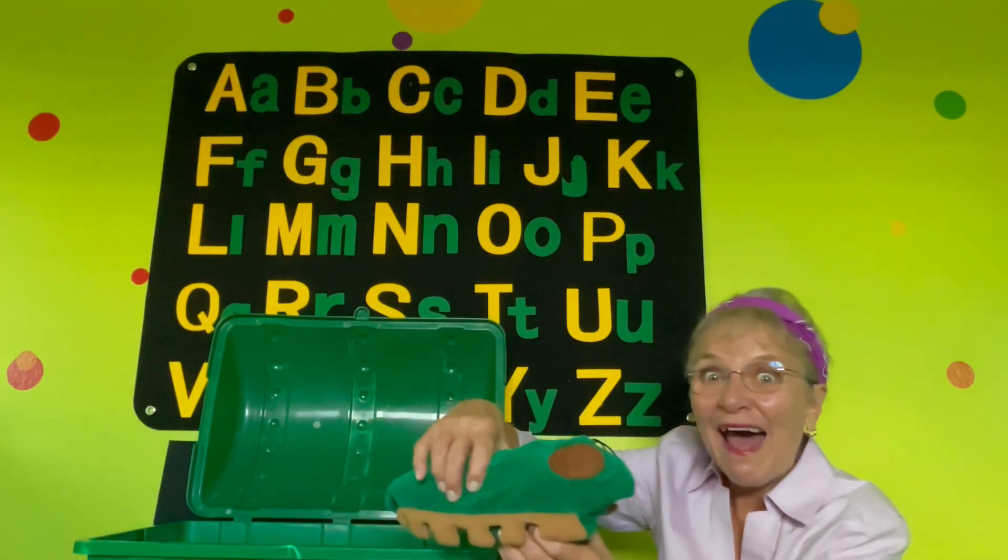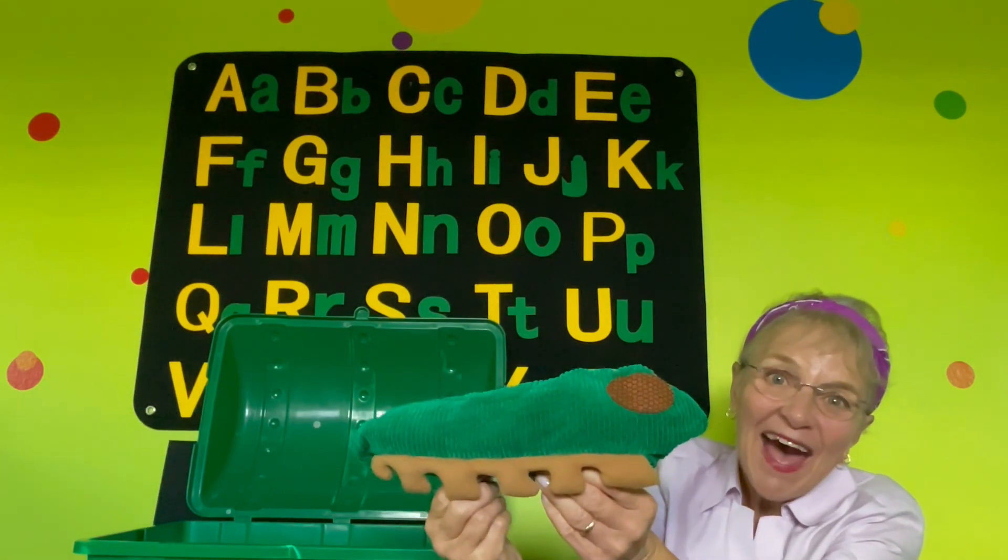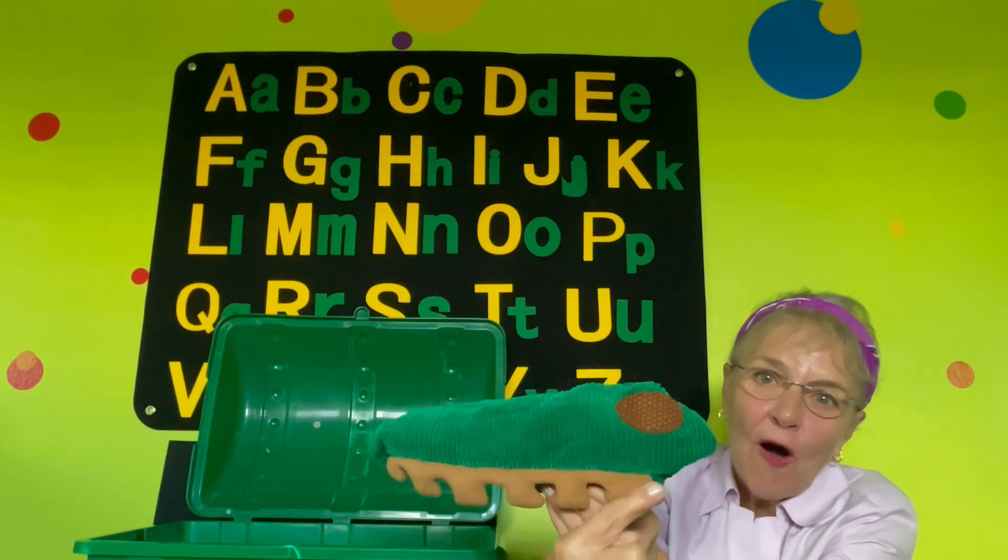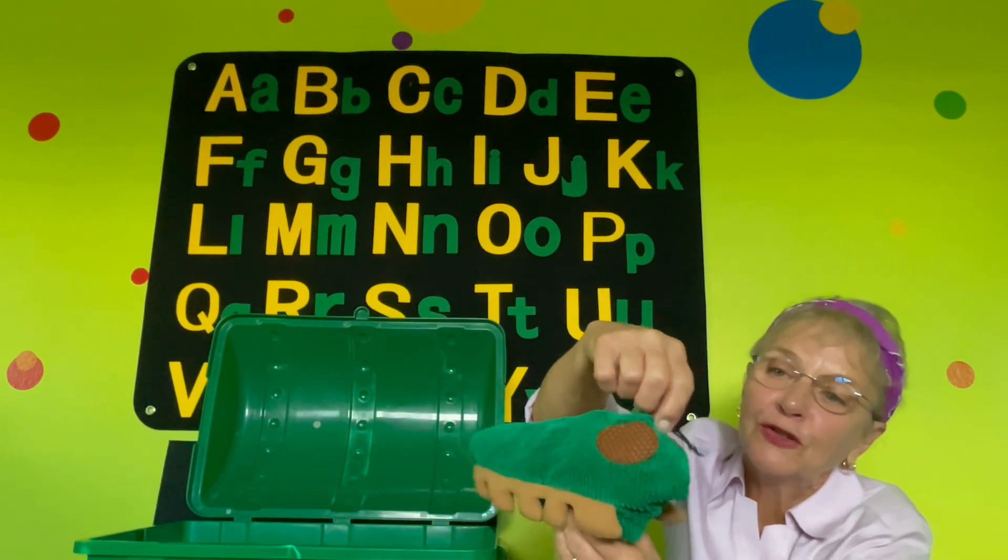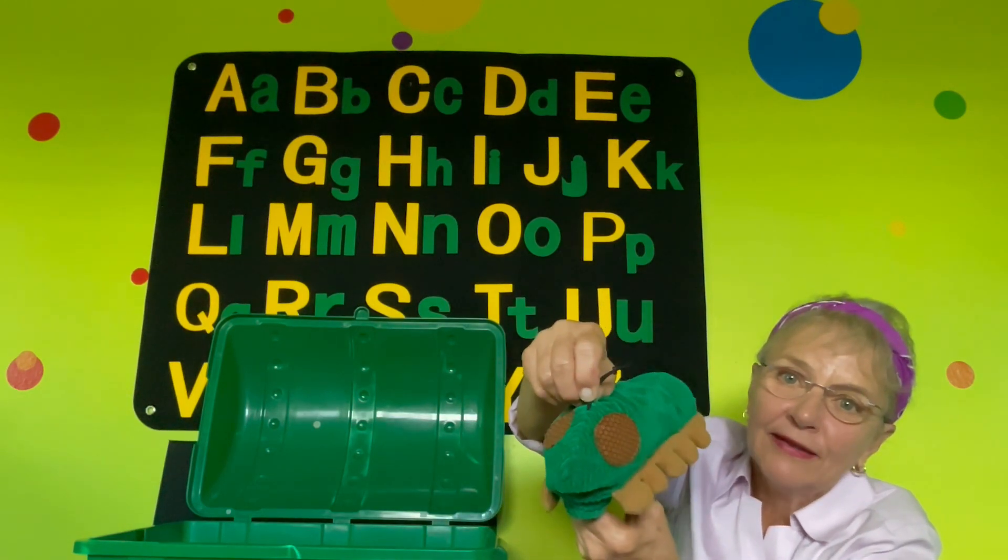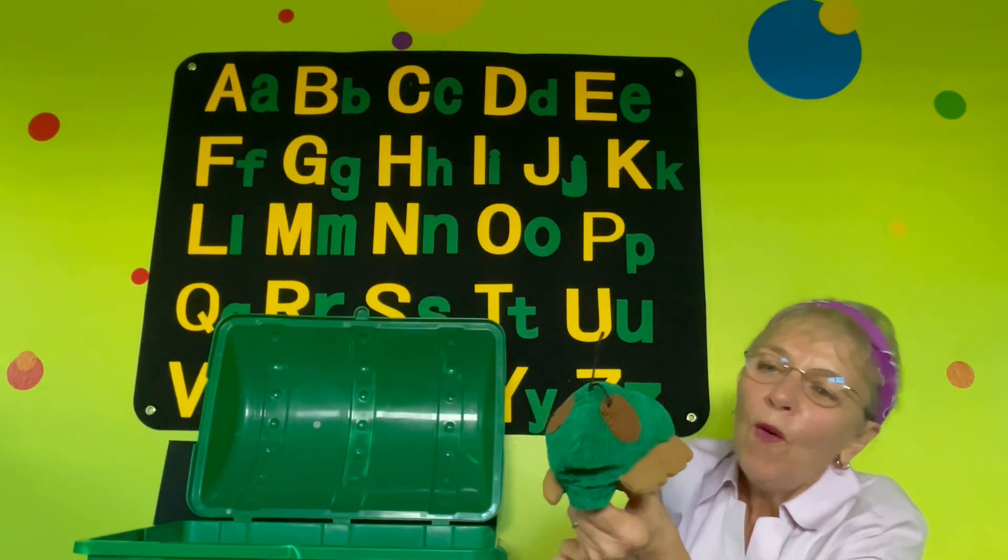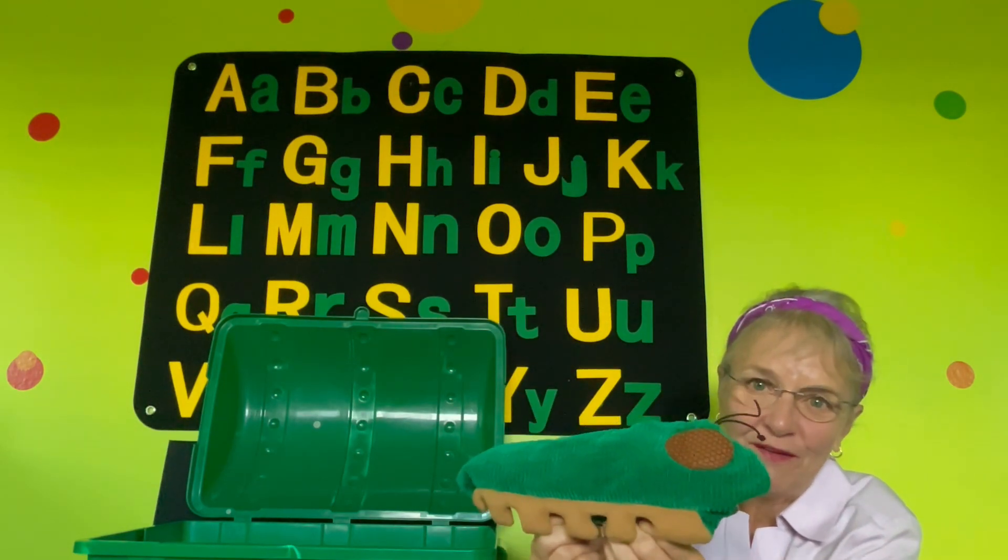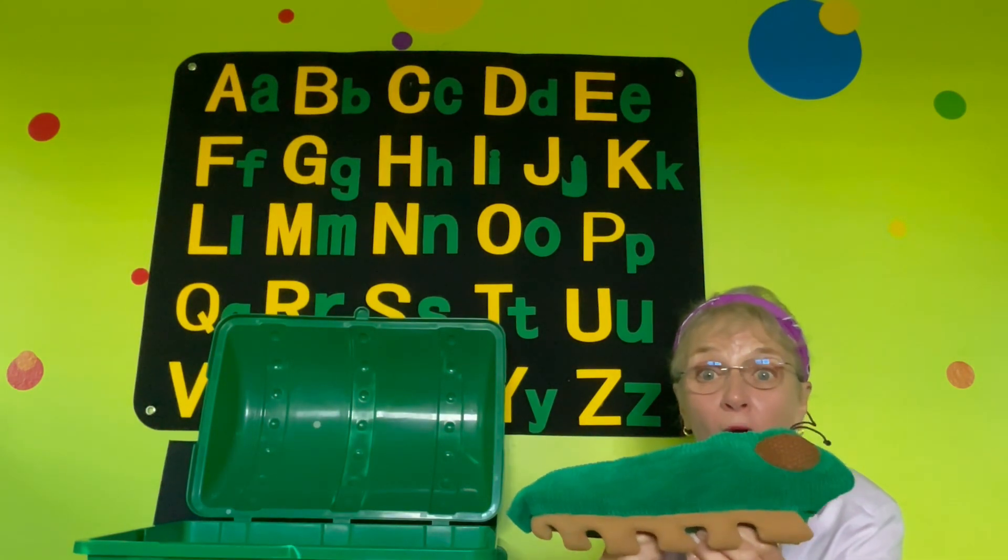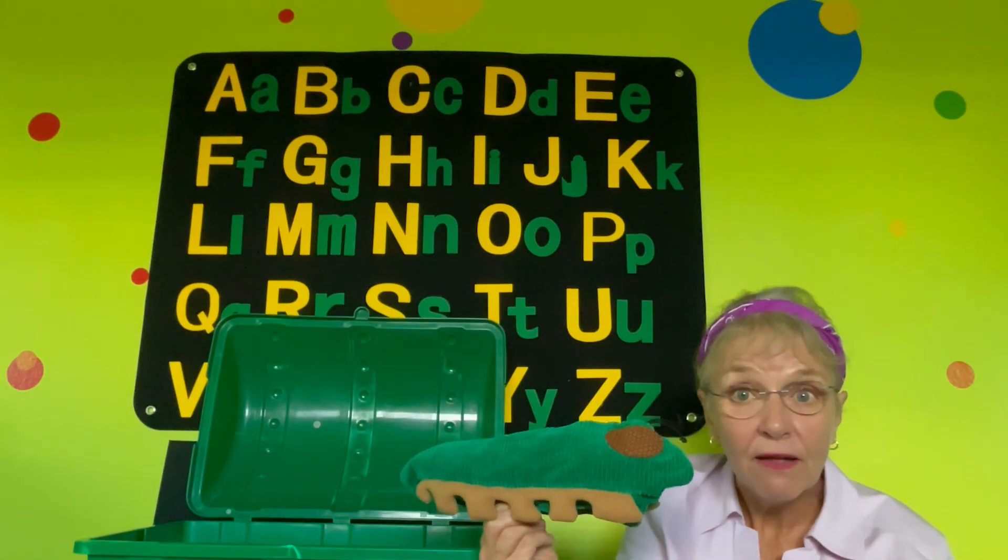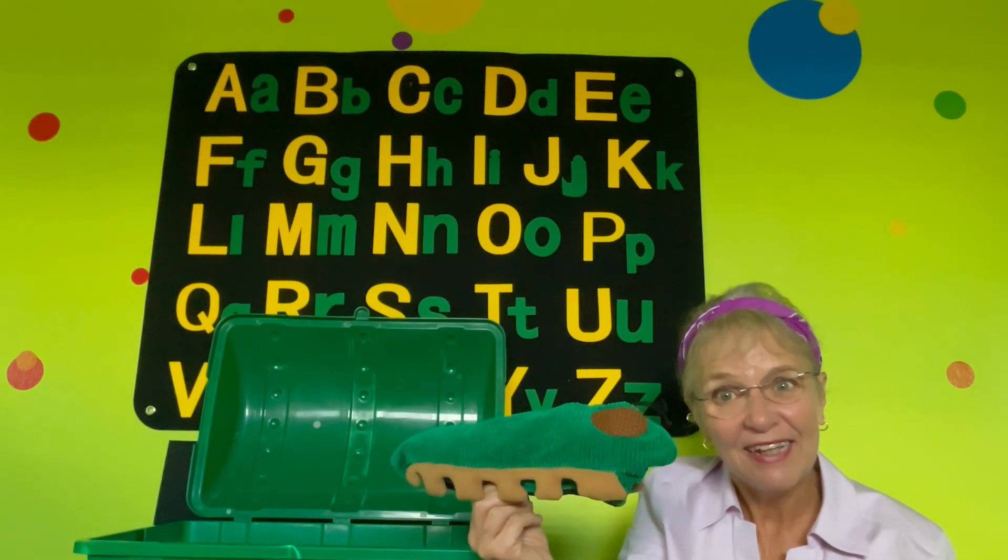I'm going to show you something else that begins with the C, C sound. A caterpillar. Look at that caterpillar. Look at all the legs on the caterpillar. And look at the caterpillar's great big eyes. Those are his antenna right there. What color is this caterpillar? Green, right? Caterpillars can be all different colors. And think about it. The word color begins with the letter C. Color.